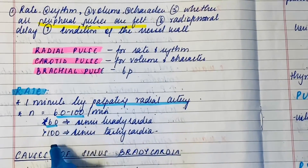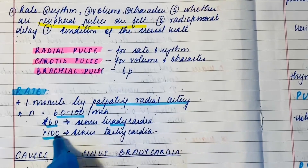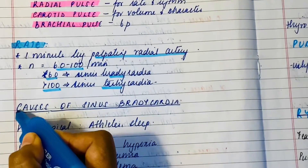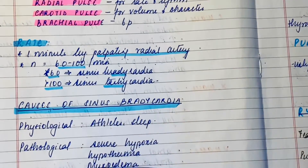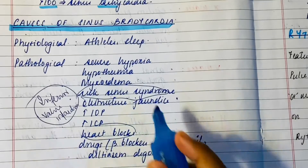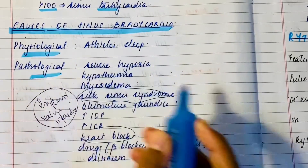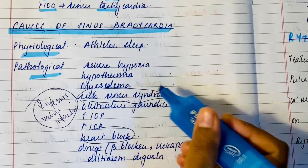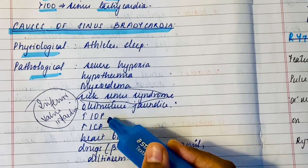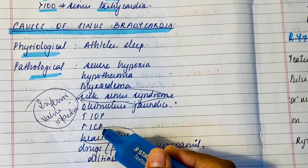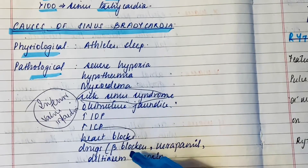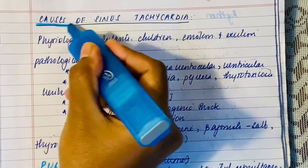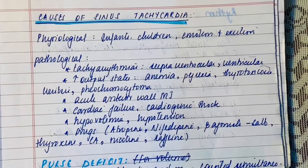Less than 60 is considered sinus bradycardia and more than 100 is considered sinus tachycardia. Physiological causes of sinus bradycardia include athletes and during sleep. Pathological examples include severe hypoxia, hypothermia, myxedema, sick sinus syndrome, obstructive jaundice, increased intraocular pressure, increased intracranial pressure, any type of heart block, or drugs like beta blockers and calcium channel blockers.